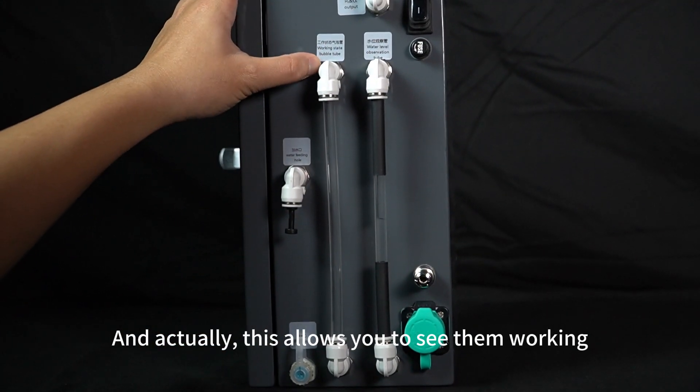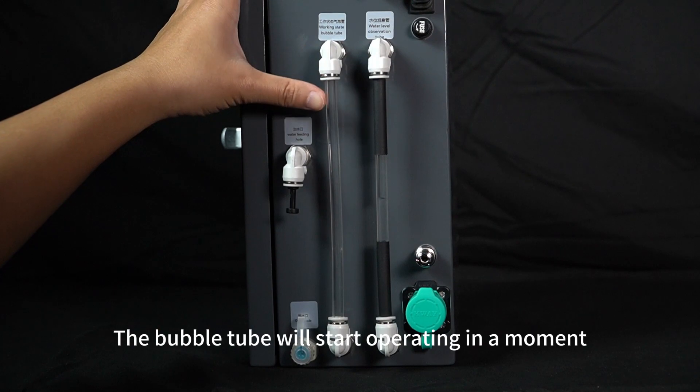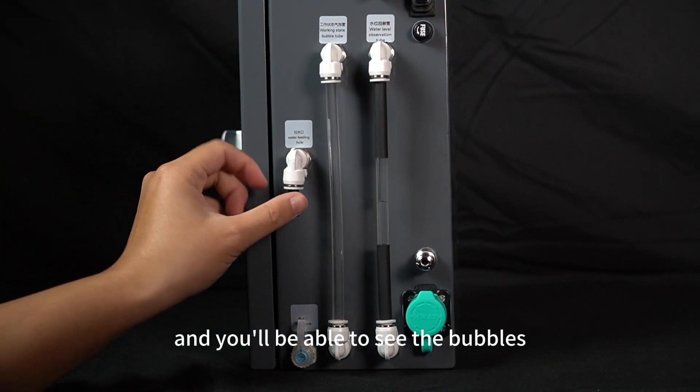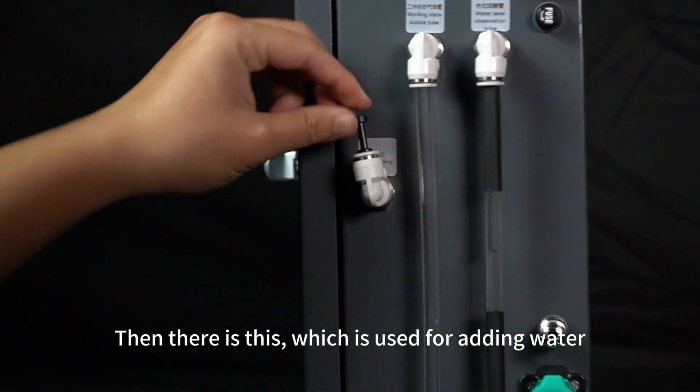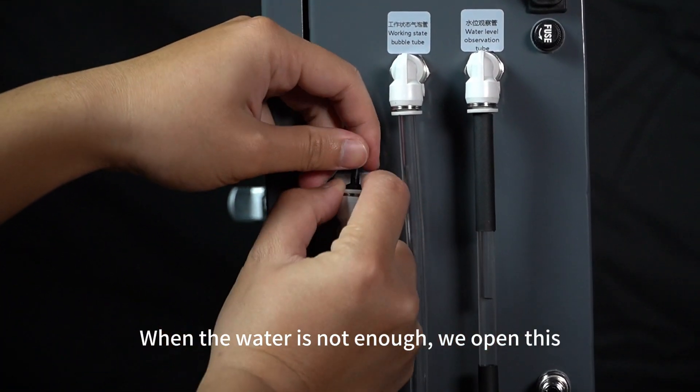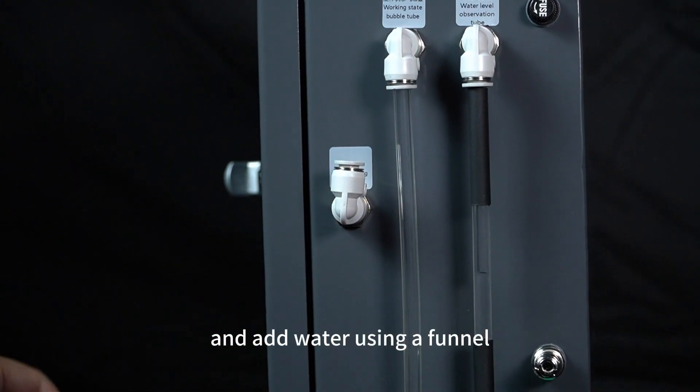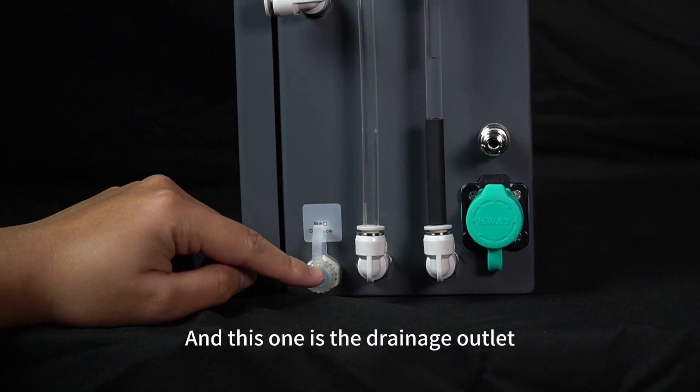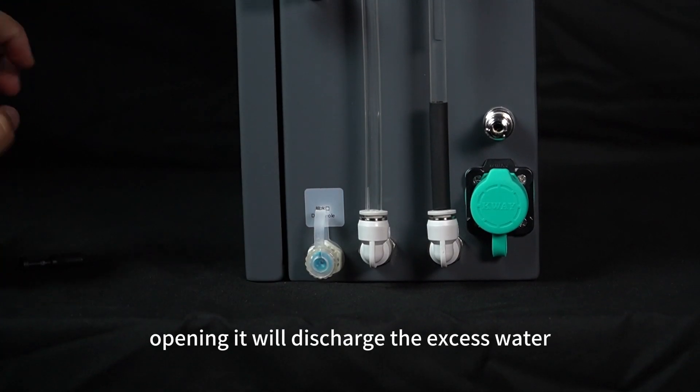This allows you to see them working. The bubble tube will start operating in a moment, and you'll be able to see the bubbles. Then there is this, which is used for adding water. When the water is not enough, we open this and add water using a funnel. And this one is the drainage outlet. Opening it will discharge the excess water.